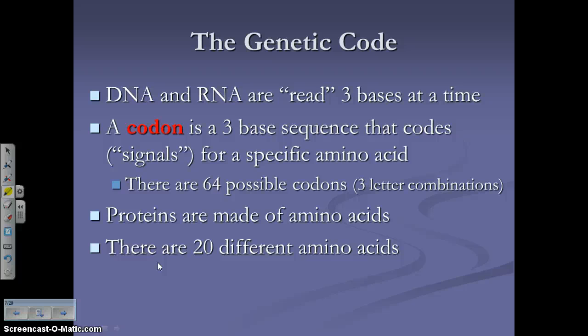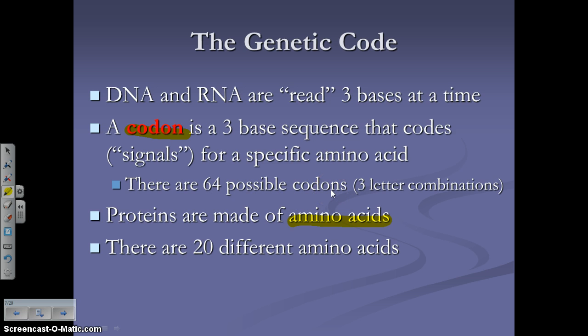DNA and RNA are read three bases at a time. That set of three bases is called a codon — a three-base sequence that signals for a specific amino acid. There are 64 possible codons, or three-letter combinations. Proteins are made up of amino acids, which are the monomers of the protein polymer. There are 20 different types of amino acids but 64 possible codons, so several codons code for the same amino acid.